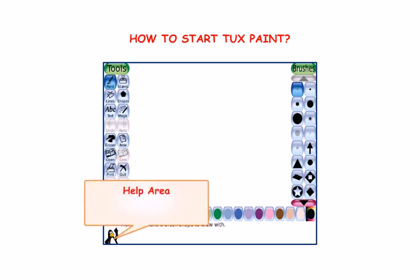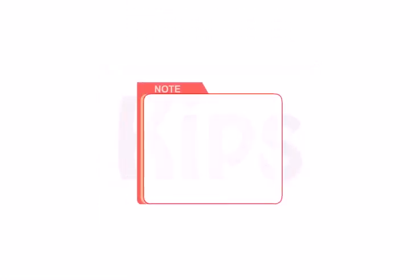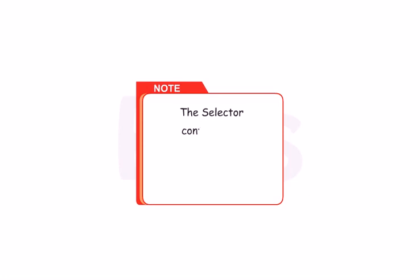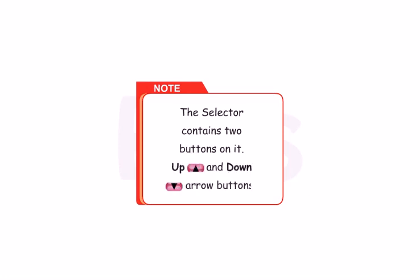Help Area gives you tips and details of the selected tool. Note that the selector contains two buttons on it: Up and Down Arrow buttons.